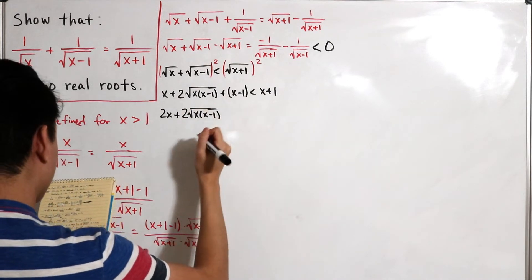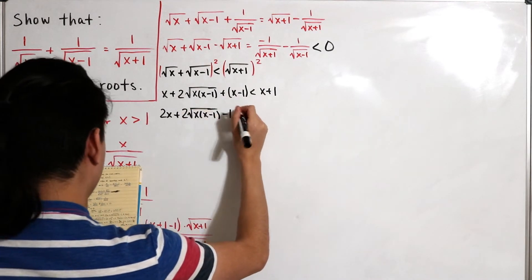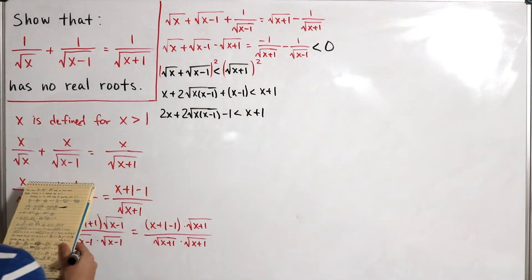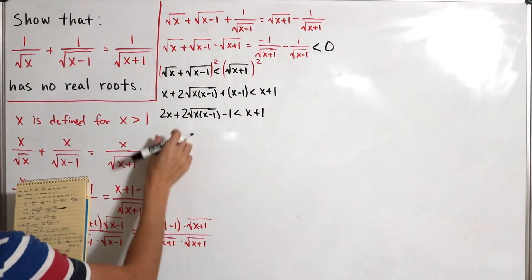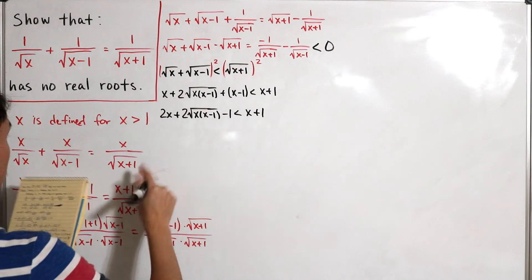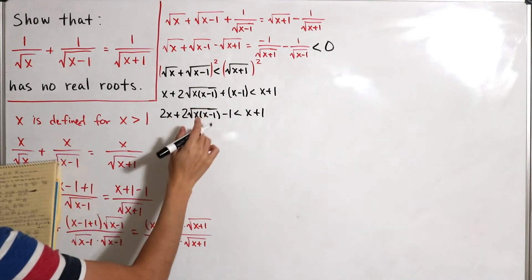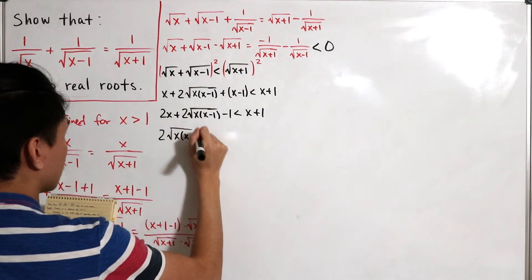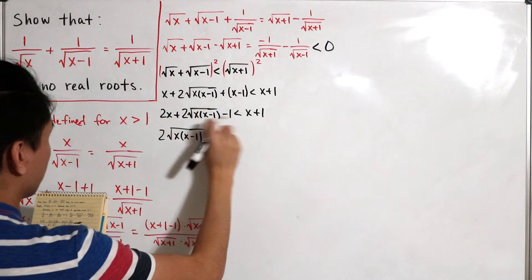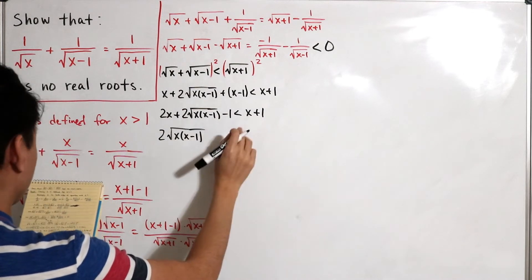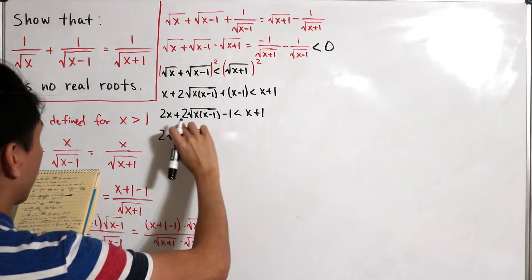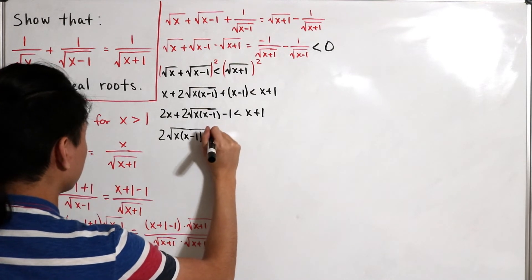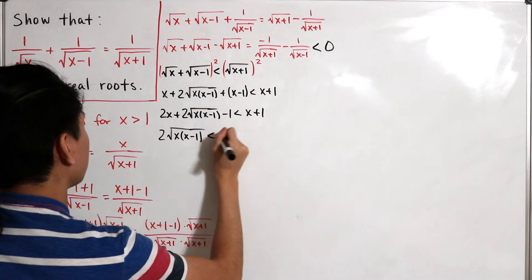Combining terms: 2x plus 2 times the square root of x(x minus 1) minus 1, is still less than x plus 1. Now subtracting 2x and adding 1 to both sides, and rearranging using commutativity of addition and subtraction, we isolate the square root term.